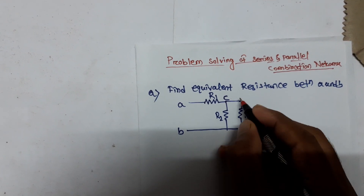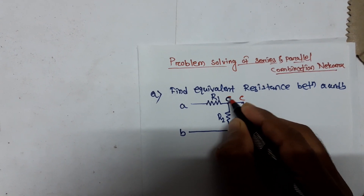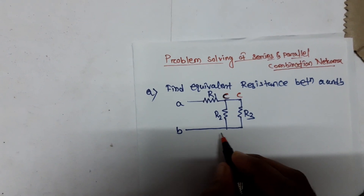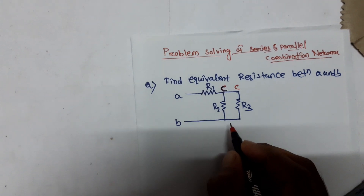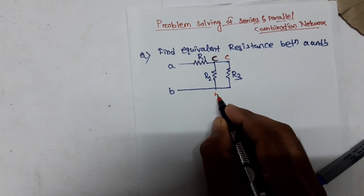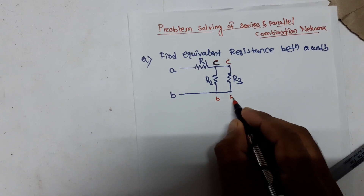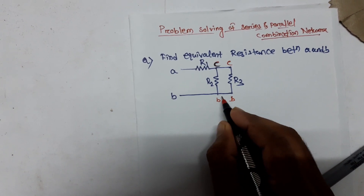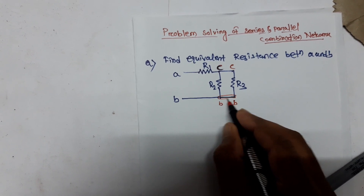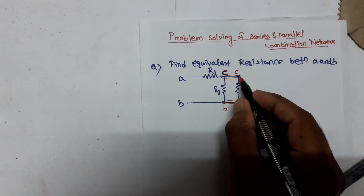Let's call the next node C. Then there is another node — since there is no resistor between them, we take that same node as C. Here the next node we take as B. There is no resistance between them, so that is a single node B.